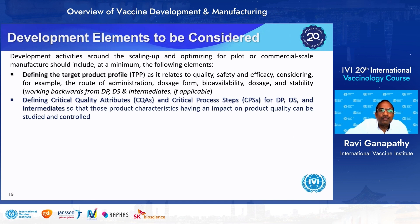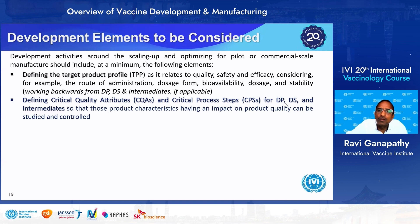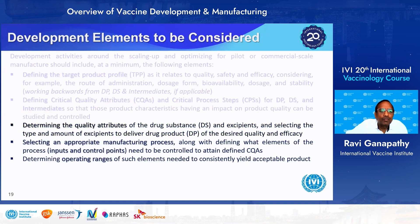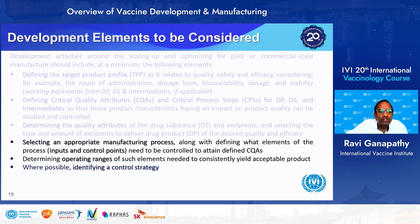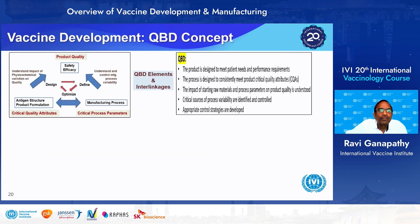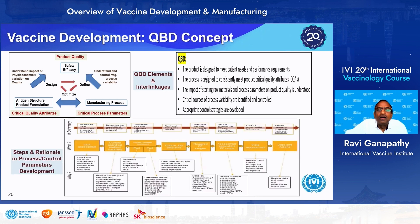Development elements to consider: the TPP must be defined; CQAs and CPPs for both drug substance and drug product must be defined. Drug substance is the active pharmaceutical ingredient, which when formulated with excipients forms the drug product in the final container. The quality attributes of drug substance, excipients, and drug product must be determined, and the appropriate manufacturing process selected to define what elements need to be controlled to attain defined CQAs. QbD is a concept where the product is designed to meet patient needs and the process is designed to consistently meet the CQAs.